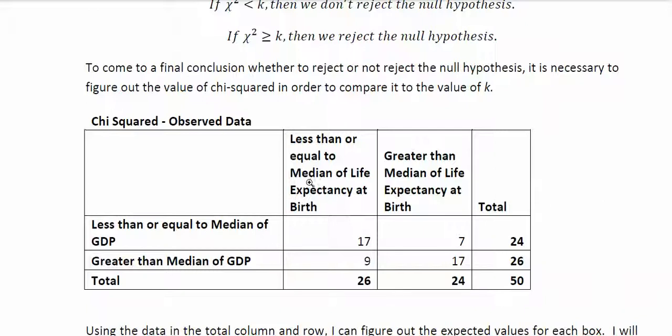And so what this unit has done is basically, you've got the life expectancy here, and anything that is less than or equal to the median value goes on the left-hand side. Anything that's greater than the median life expectancy goes on the right-hand side.